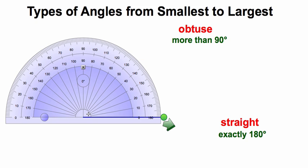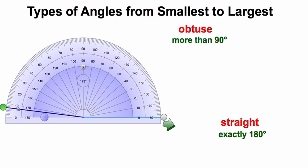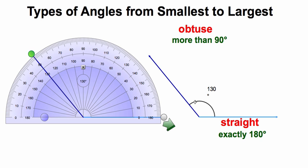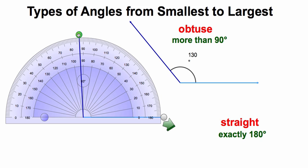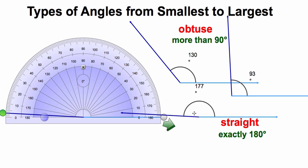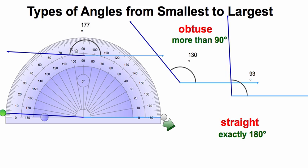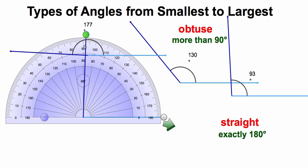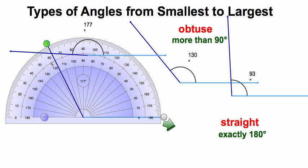Next would be the obtuse angle, and that tells us it's going to be more than 90. So if we go straight up to our right angle here, it's going to be anything past that all the way down to an almost straight angle. So 130 degrees would be an obtuse angle. 93 degrees would be an obtuse angle. If we go all the way down, almost so it looks like a straight line, but stop at like 177, that's going to be an obtuse angle. So anything between the 90 and the 180 are going to be obtuse angles.